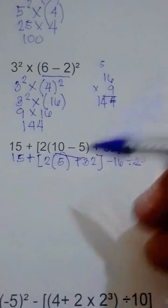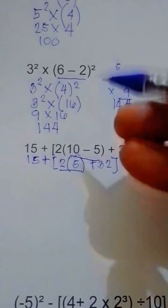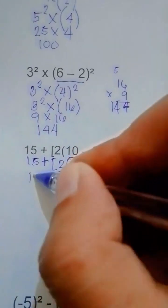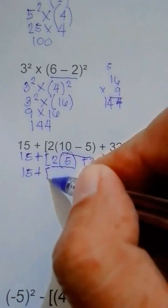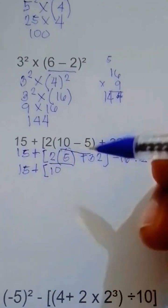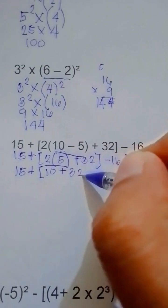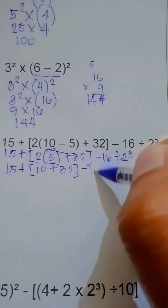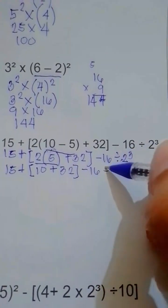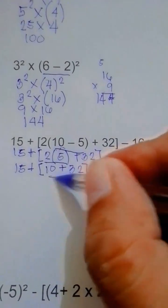Next one, we have to answer this one. So 15 copy, plus 2 times 5 equals 10. We have to copy first the bracket, 10, then plus 32. We have to enclose this one, then minus 16 divided by 2 raised to the power of 3. Next one, we have to perform this one.